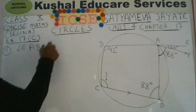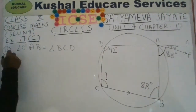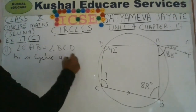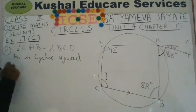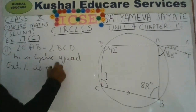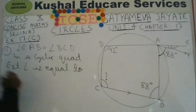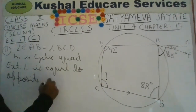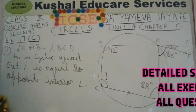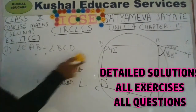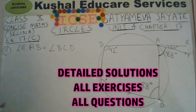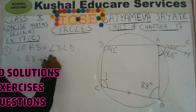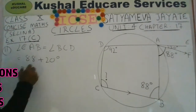You can again make use of the cyclic property: the exterior angle equals the opposite interior angle. If ABCD is a cyclic quadrilateral, then angle EAB equals angle BCD. Angle EAF has been given as 20 degrees and angle FAB is 88 degrees, so angle BCD will be equal to 88 degrees plus 20 degrees.